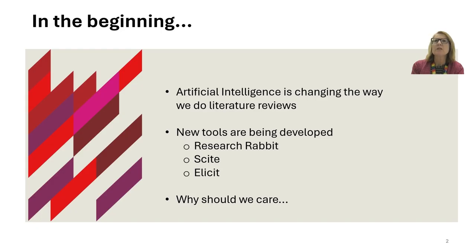How this works varies from tool to tool. In Research Rabbit, searching can be done using a seed paper. The content of the seed paper is used to search for similar papers. You can also use visualisation tools to see how papers are connected.